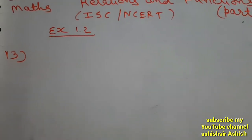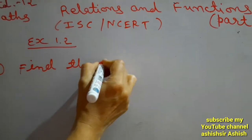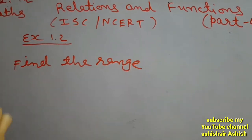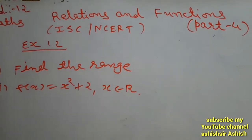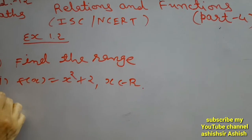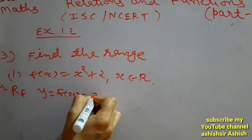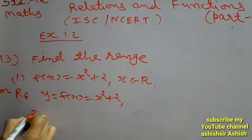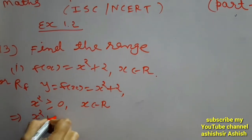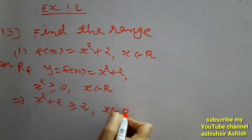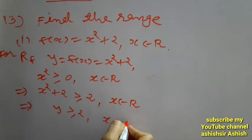Question No. 13: Find the range of the following functions. We are given two functions. First is f(x) = x² + 2, where x belongs to R. For the range of f, let y = f(x) = x² + 2. We know that x² ≥ 0 for every x belonging to R. That implies x² + 2 ≥ 2 for every x in R. That implies y ≥ 2 for x belonging to R.